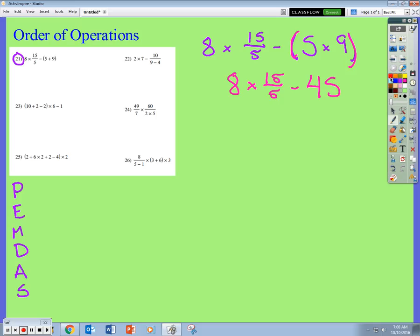Now I take a look. I have multiplication and division and subtraction left. Now typically I do multiplication and division where it comes first from left to right. But see, I can't multiply 8 times 15 over 5. I need to simplify this. What is 15 divided by 5? That's 3. So now we have 8 times 3 minus 45.